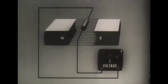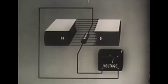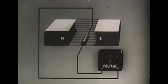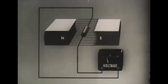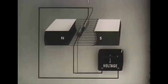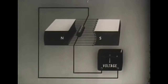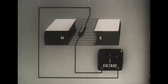Moving the conductor down through the field makes the needle of a voltmeter deflect one way — the EMF has one direction. Moving the conductor up through the field produces the opposite deflection — the EMF has now changed direction. Moving the conductor back and forth with the field does not deflect the needle; there is no EMF because the conductor is not cutting the field.